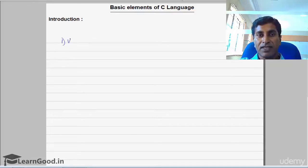variables, and then we'll see constants, then identifiers, data types, then type modifiers or data type modifiers.